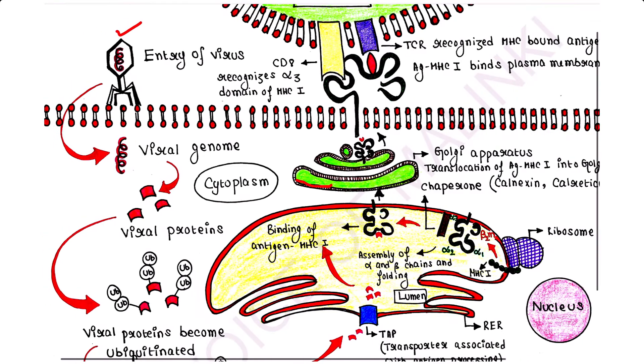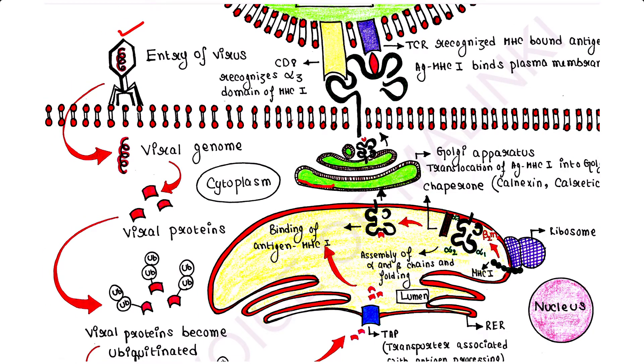If a virus infects a cell, it uses the host cell machinery to synthesize viral proteins. These viral proteins are whole antigens. Protein synthesis takes place in the cytoplasm of the host cell.